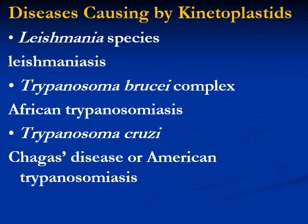Diseases caused by kinetoplastides or haemoflagellates: Leishmania species cause leishmaniasis; Trypanosoma brucei complex species cause African trypanosomiasis; and Trypanosoma cruzi causes Chagas disease or American trypanosomiasis. So we have three diseases: leishmaniasis, African trypanosomiasis, and American trypanosomiasis.